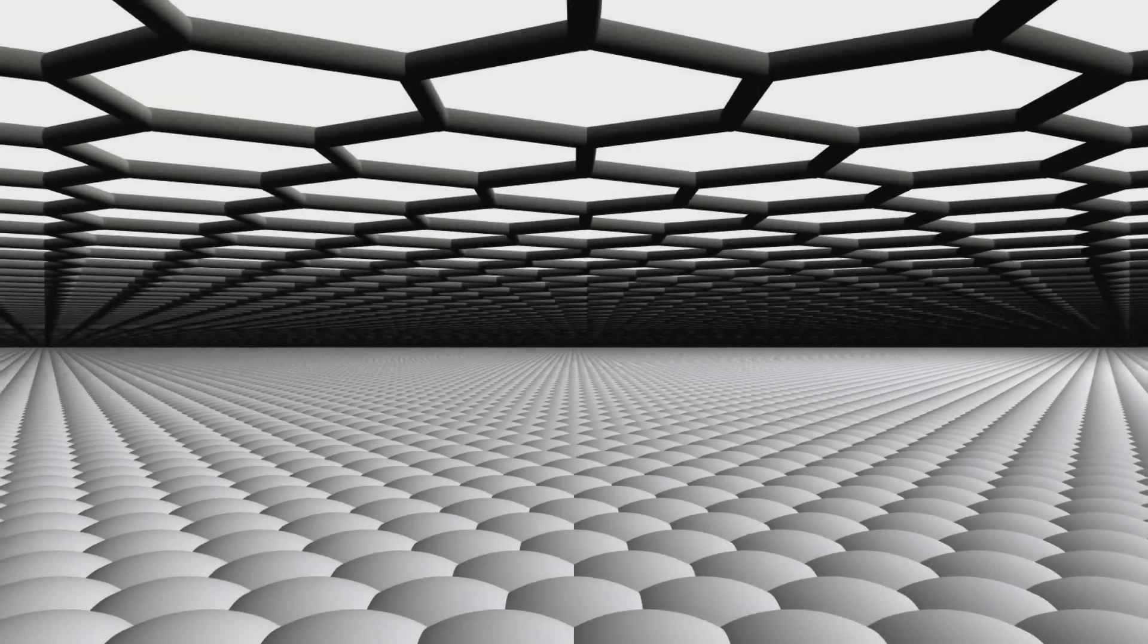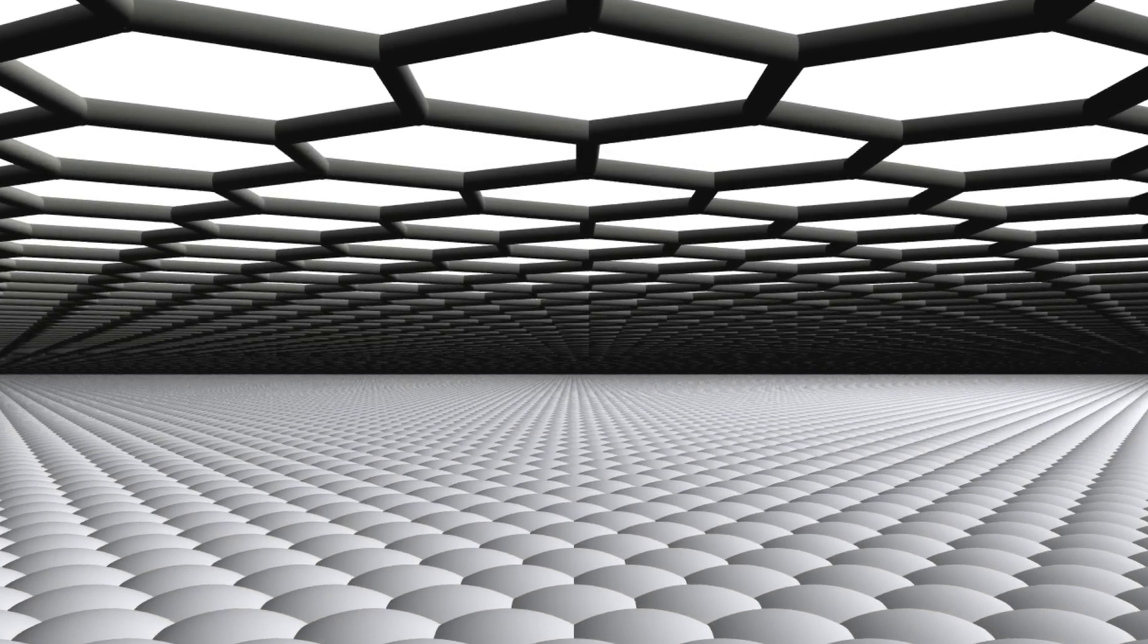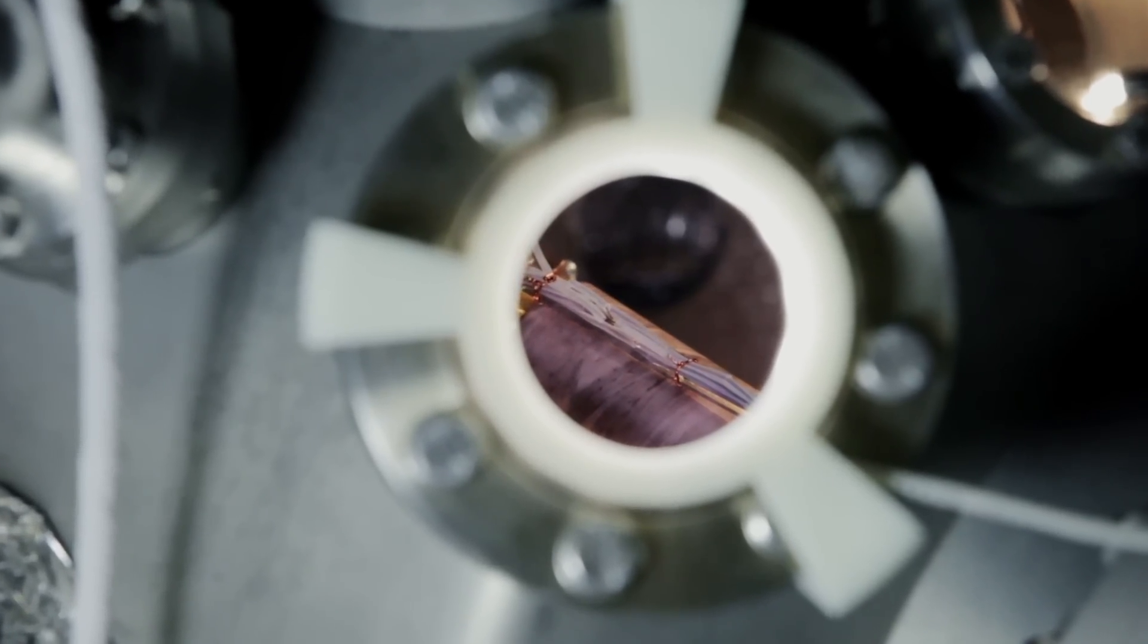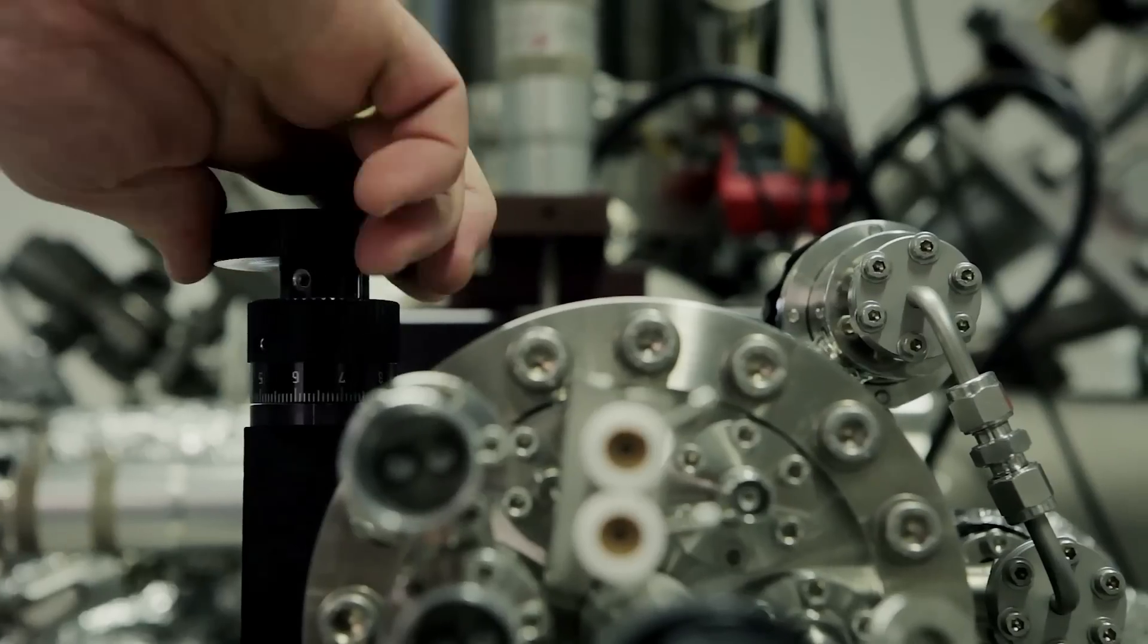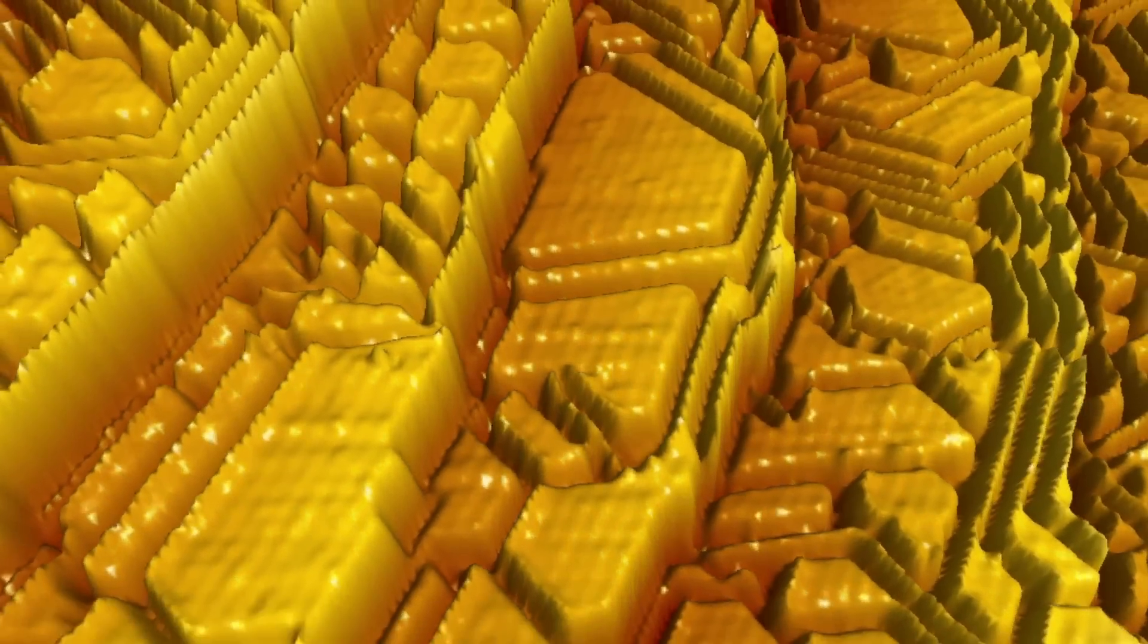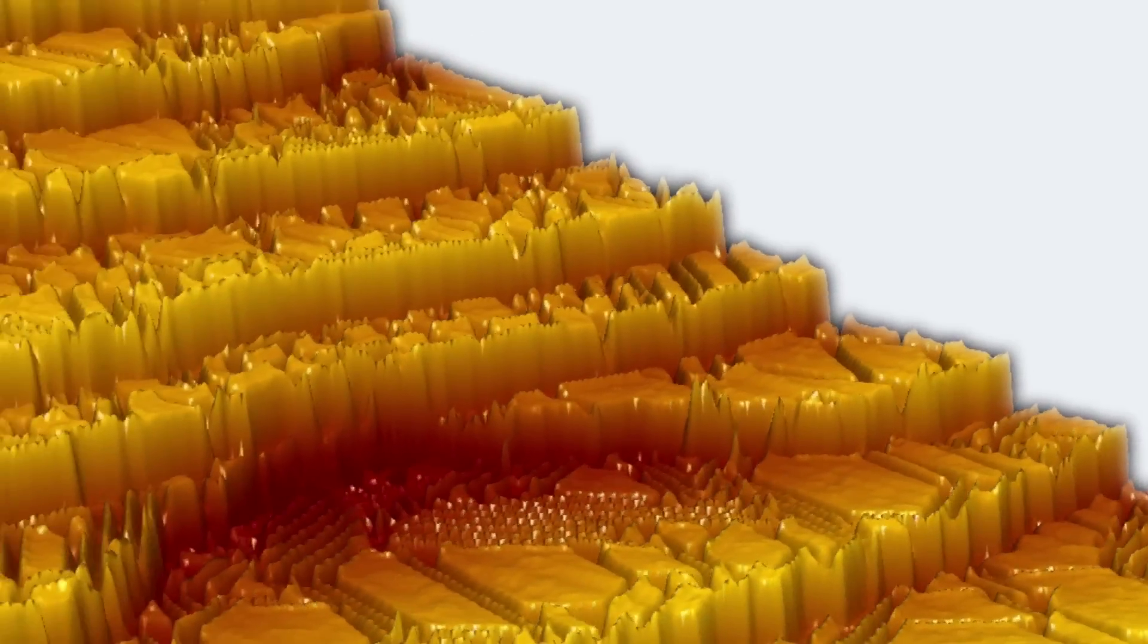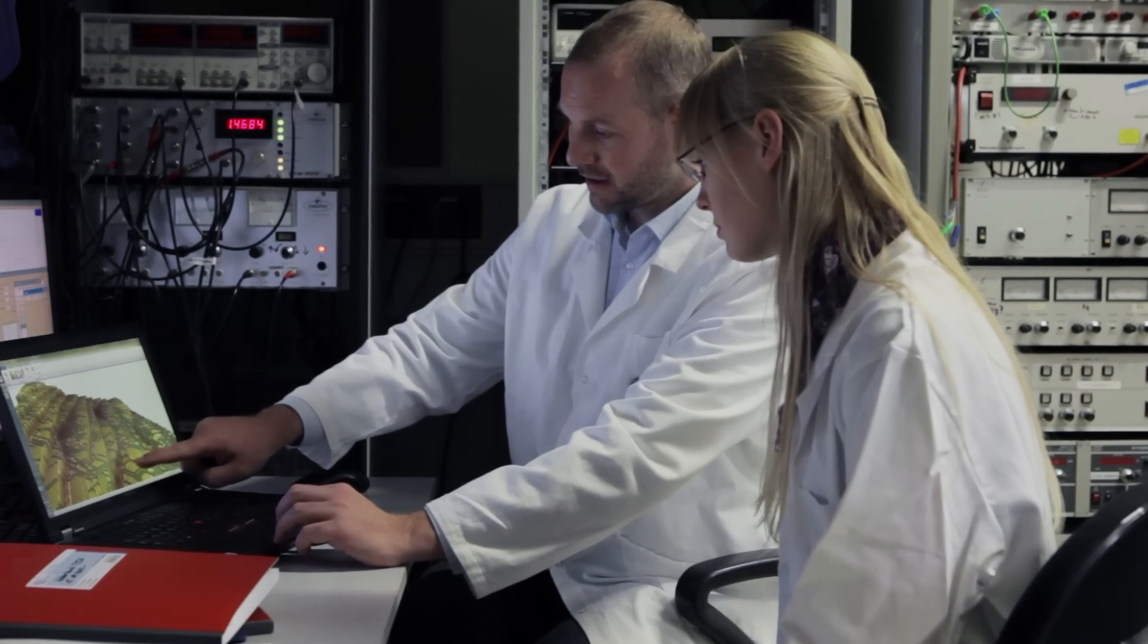Another example, graphene, made of one single atomic layer of carbon but stronger than steel, extremely flexible and a good electrical conductor. A unique combination of seemingly contradictory characteristics from which new technology such as flexible displays can be developed.